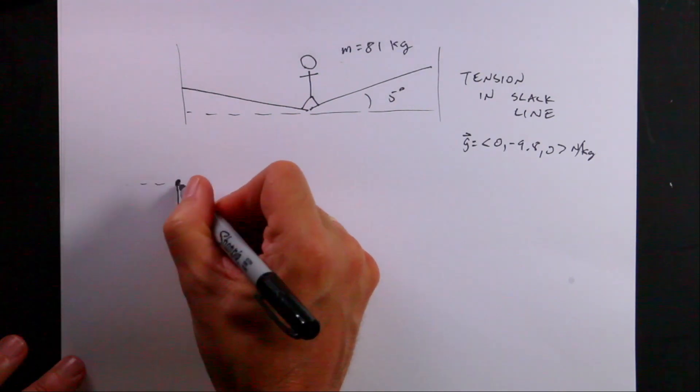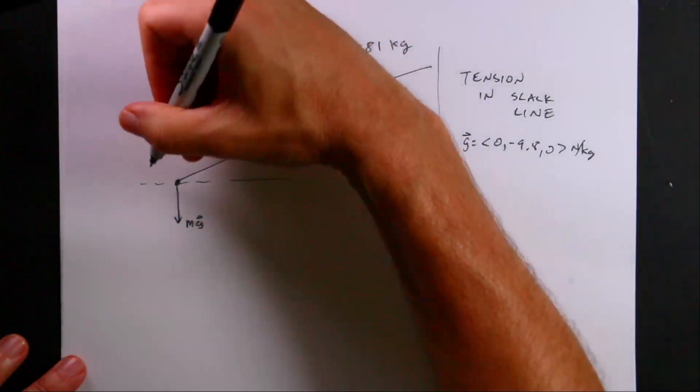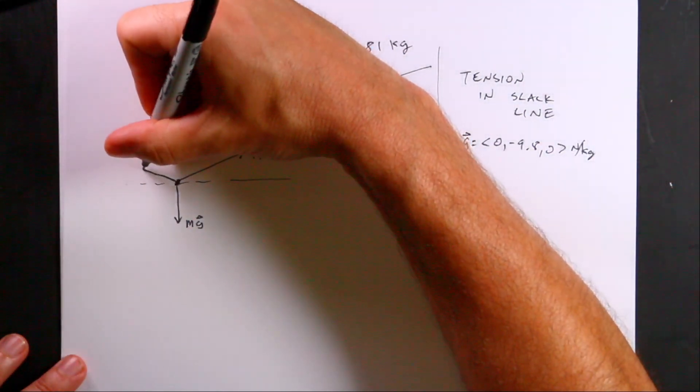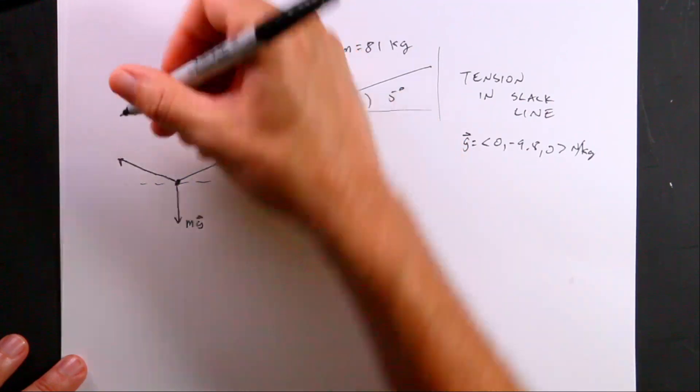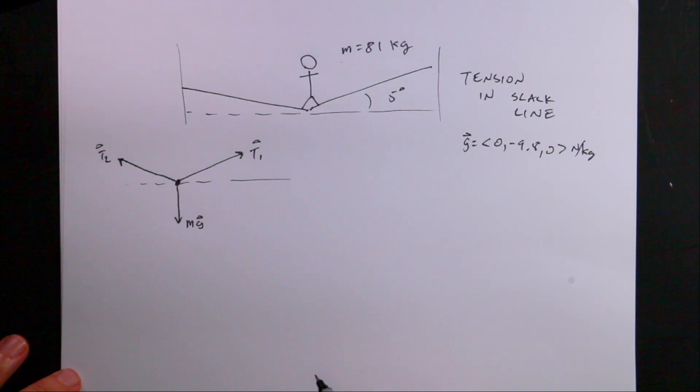So let's put a line right there. And we'll call this T1. And we'll call this one T2. And there's nothing else touching the person.